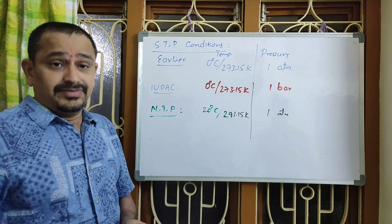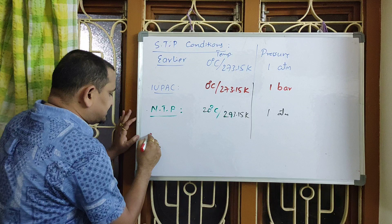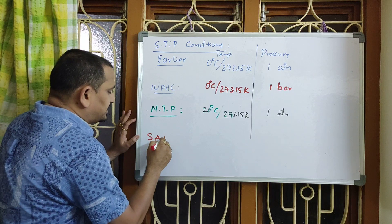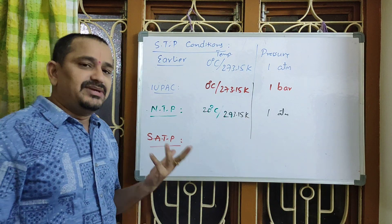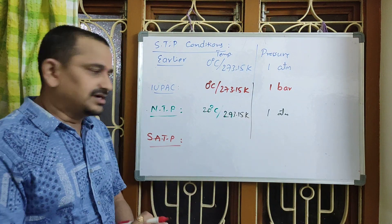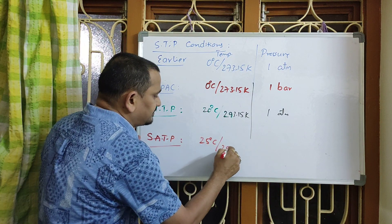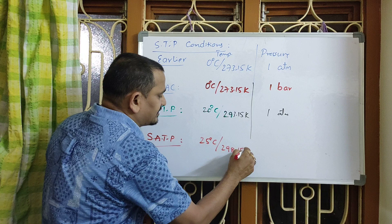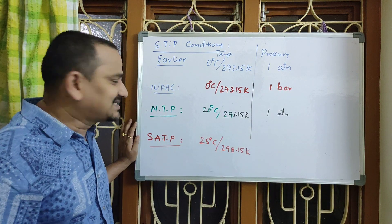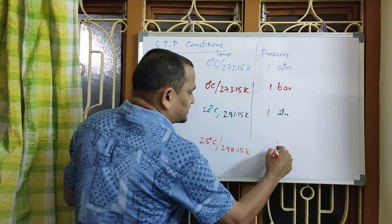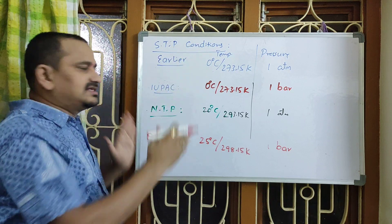We have another set of conditions, namely standard ambient temperature and pressure conditions — SATP. This is 25 degrees Celsius or 298.15 Kelvin, and 1 bar pressure. Better you remember all these values.